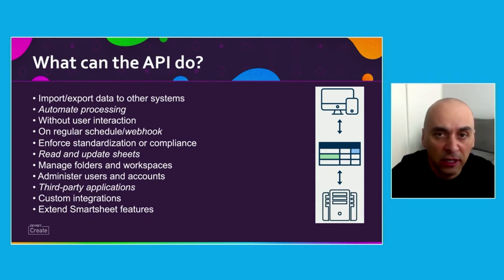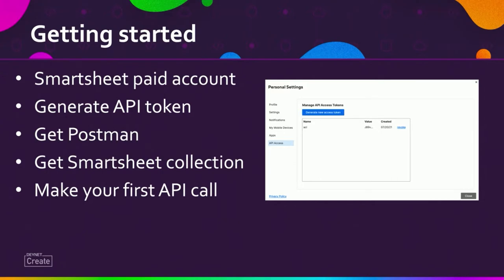We'll see in a couple of slides that there is some functionality that is not there yet and how we go about addressing that problem. To get started with the Smartsheet API, first you would have to create a developer account, which is attached to your Smartsheet paid account. Under your personal settings in your profile, as you can see here on the right-hand side in the slide, you can actually generate your access token. This will be your authentication token for interacting with the Smartsheet API. You can also revoke your token here if it's been compromised, and generate a new one.